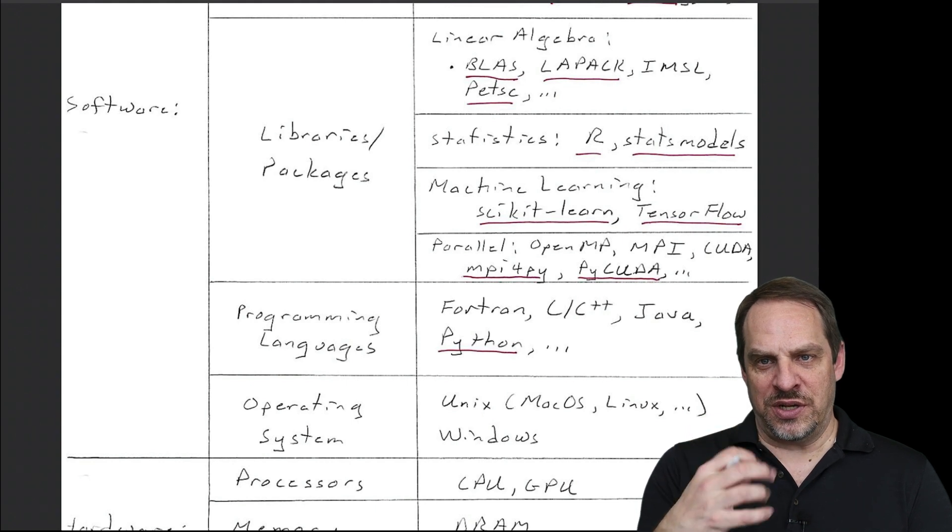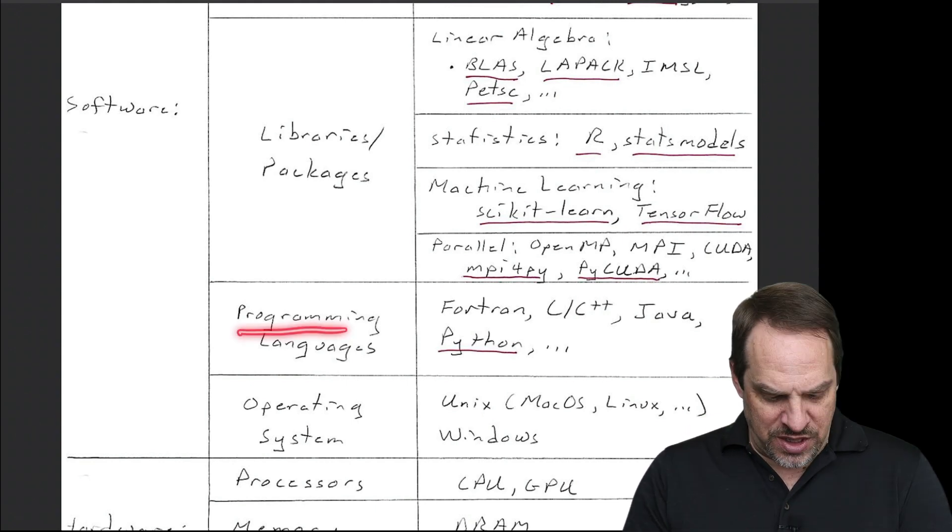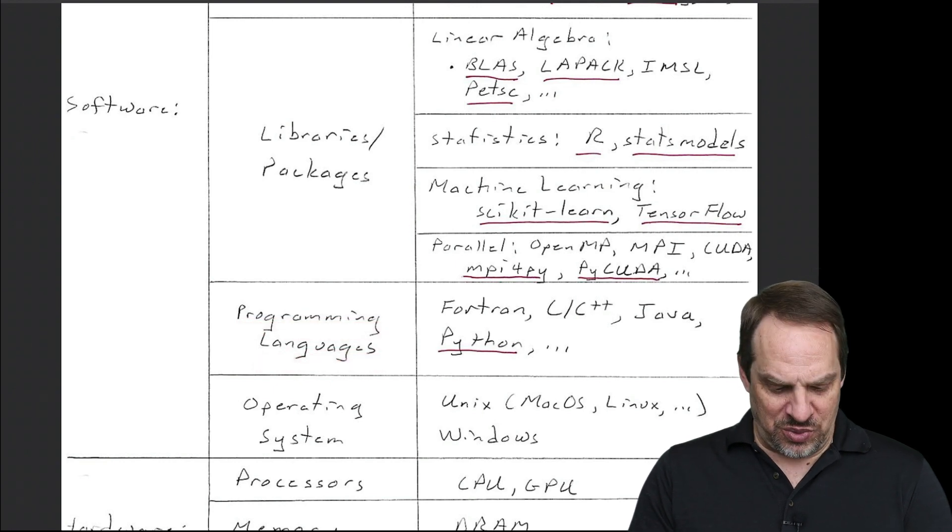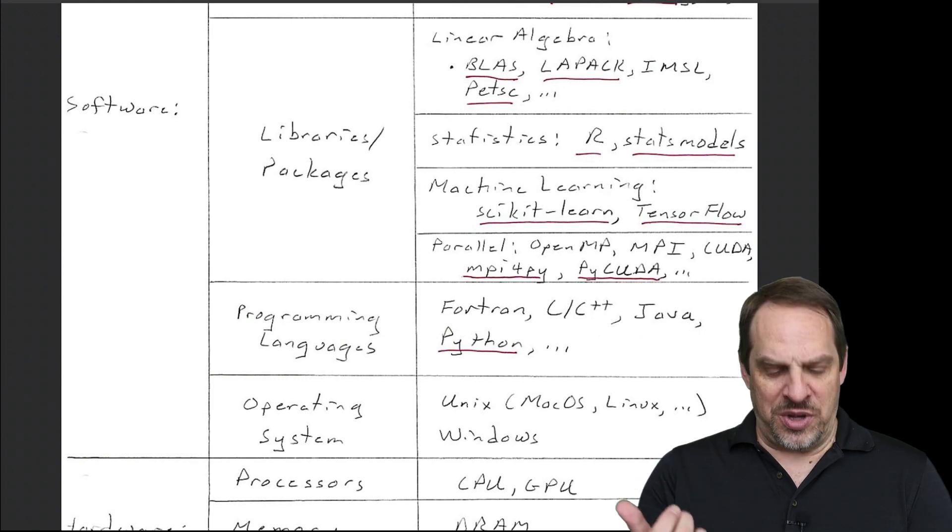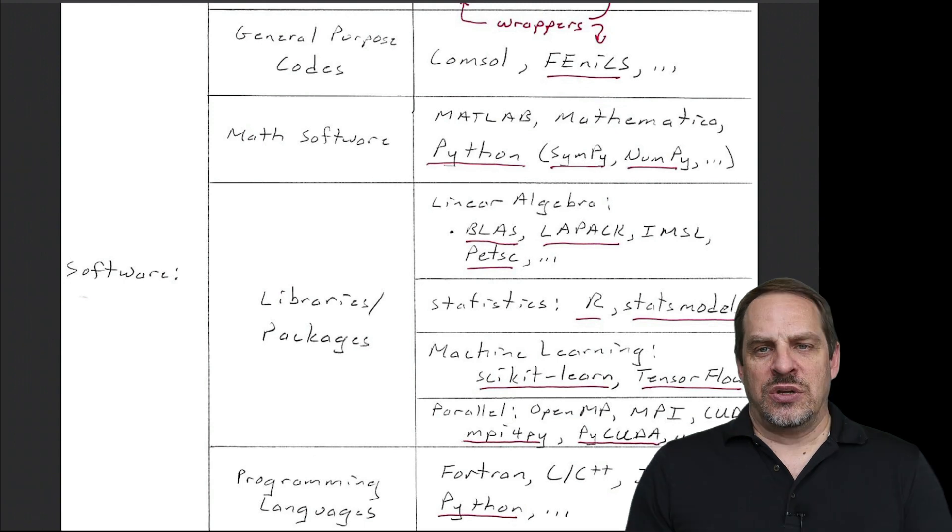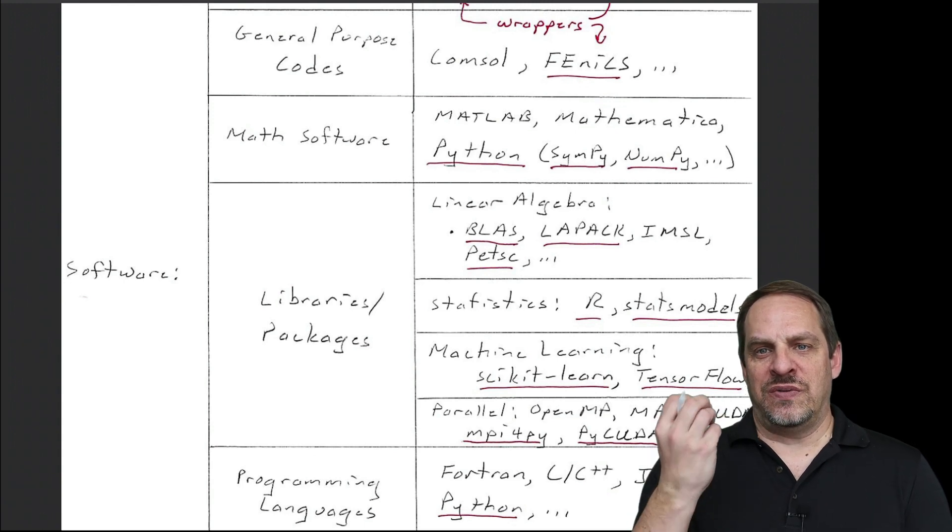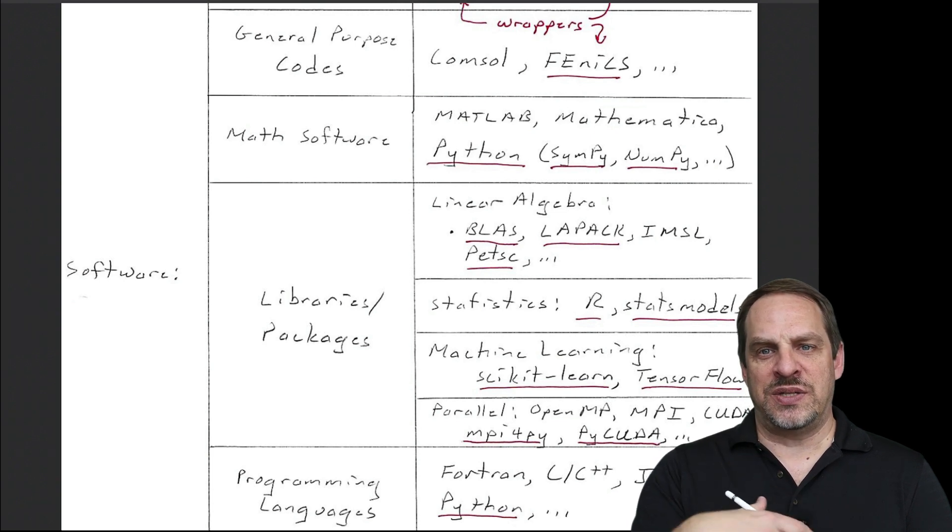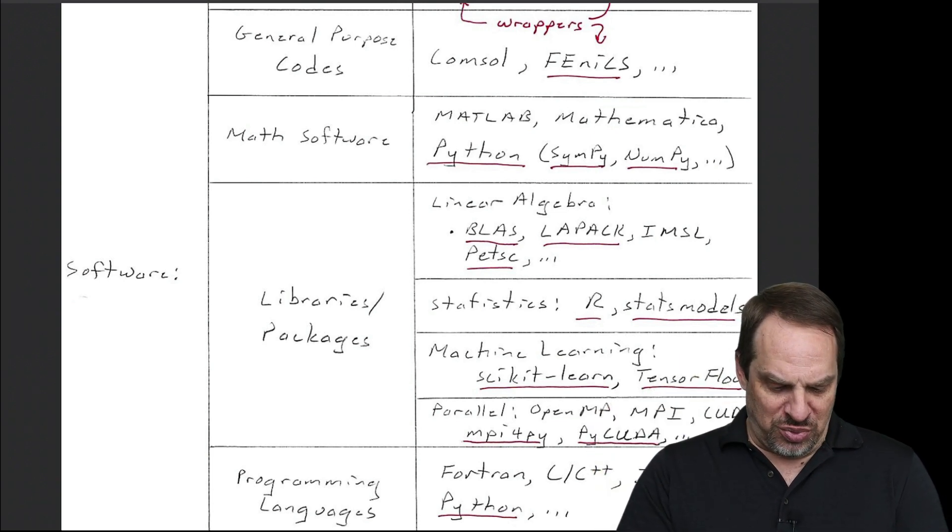The operating system, that's what tells the hardware what to do. Then on top of the operating system, we have our programming languages. So that's what we just discussed. Fortran, C++, Java for doing web-based applications, and Python. And then we have libraries and packages.